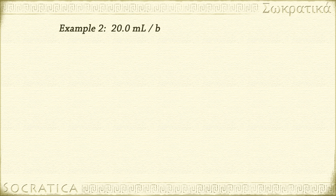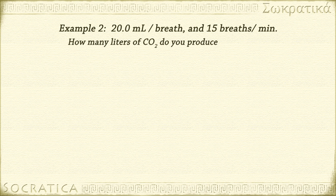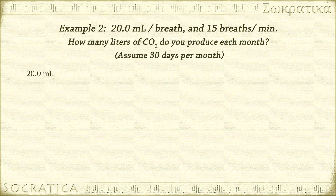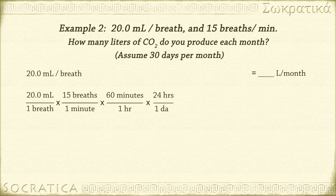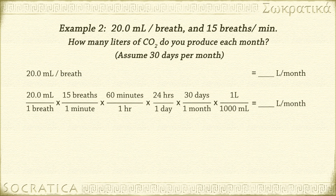Here's another example. You exhale 20.0 milliliters of CO₂ with every breath. If you breathe 15 times per minute, how many liters of CO₂ do you produce each month? Assume 30 days per month. We're starting with 20.0 milliliters per breath and we want to end up with liters per month. That's going to require a lot of conversion factors, so leave a big space. 20.0 milliliters per 1 breath times 15 breaths per 1 minute times 60 minutes per 1 hour times 24 hours per 1 day times 30 days per 1 month times 1 liter per 1,000 milliliters equals some number of liters per month. Make sure your units cancel.